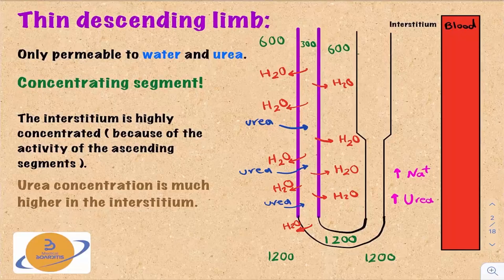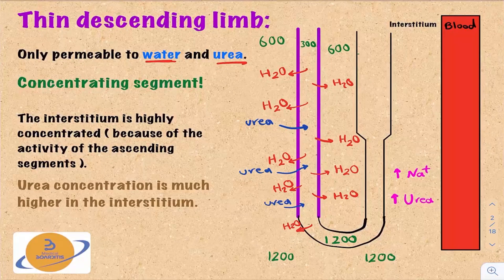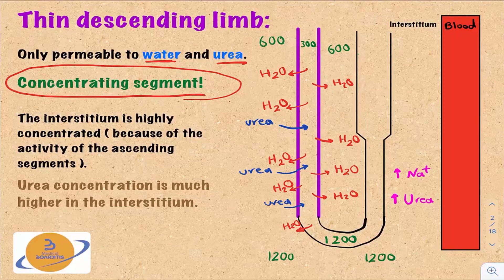The thin descending limb is permeable only to water and urea. It's not permeable to solutes like sodium, chloride, potassium, or other ions. That's why it's called the concentrating segment — the filtrate becomes very concentrated here because you're losing water but not solutes.